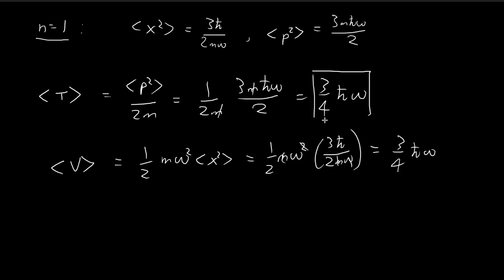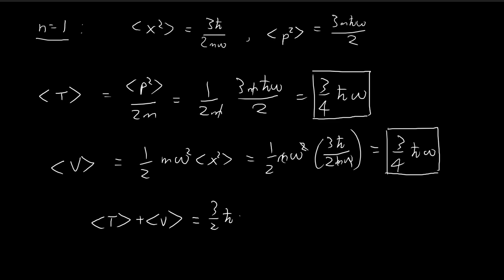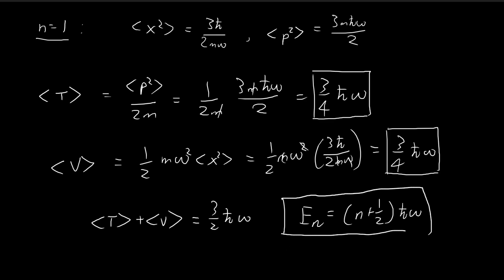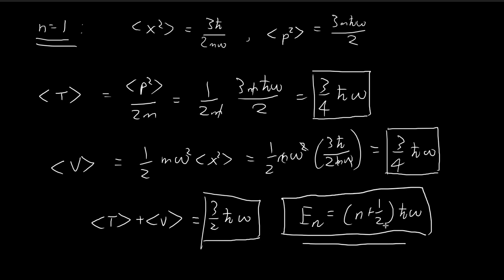After cancellation, the kinetic energy is ¾ ℏω, and the expected potential energy is also ¾ ℏω. Adding these up gives 3/2 ℏω. This corresponds exactly to what we expect from the energy formula with n equal to 1, substituted into (n + ½) ℏω. All the results we derived are consistent with the harmonic oscillator model.